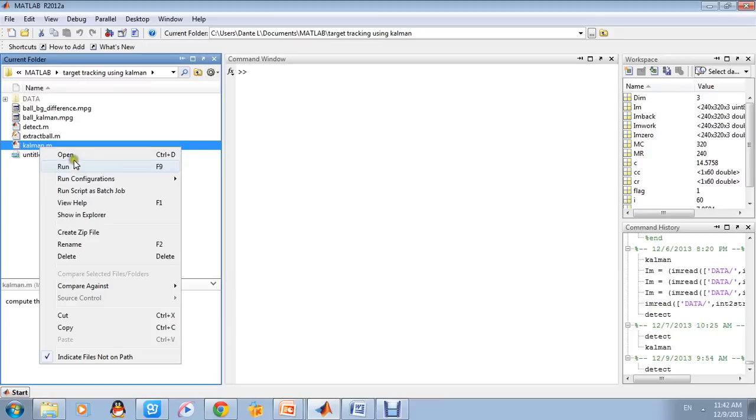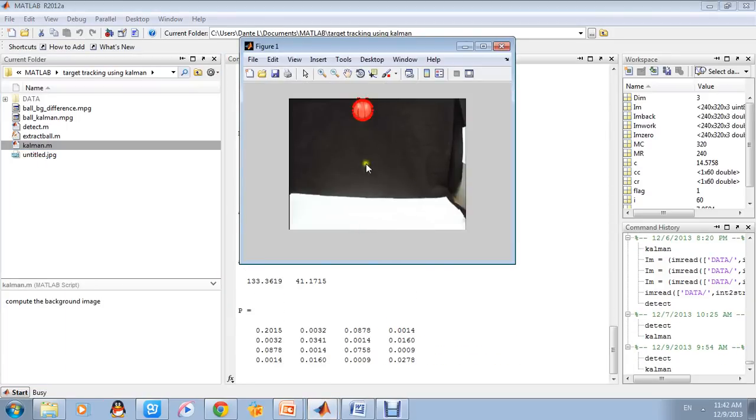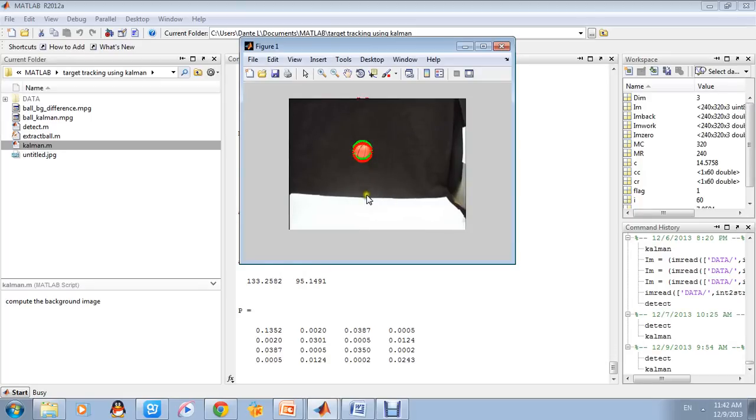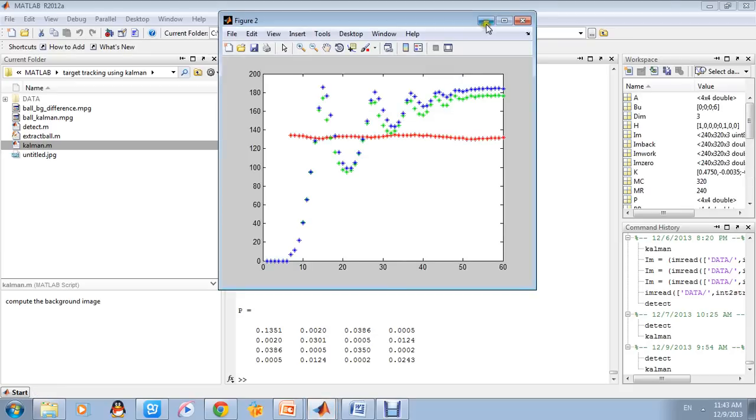Now, let's run the Kalman.m, which is based on algorithm with Kalman filter involved. We can see, besides the original detection of the ball, there is a predicting process, which is the red outline.